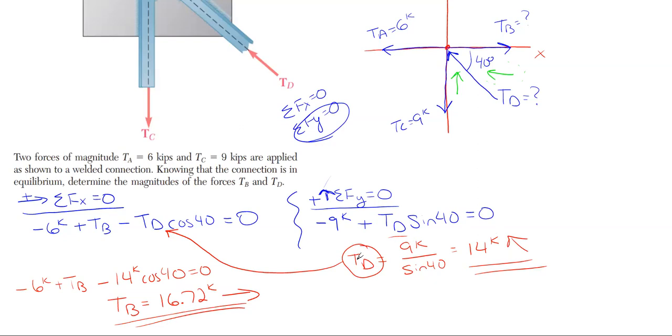In this case, we could solve for TD, and then come back to the X, plug it in, and find our other missing value.